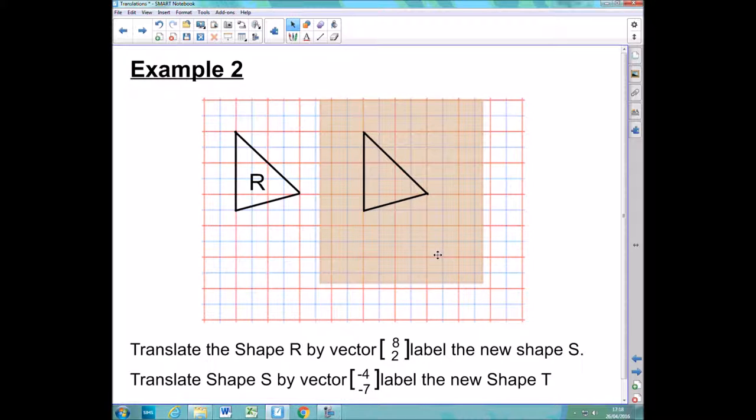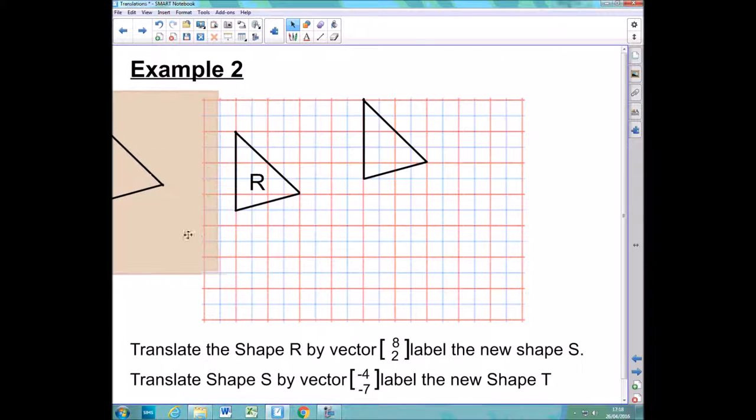And after I've done that, I'm going to move it two up. So that is one, two. And now I'm going to be really careful to remove my tracing paper and draw my shape in place of this triangle here. So there's my shape and I need to label it S.